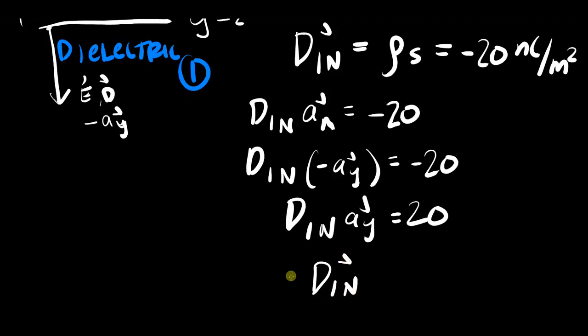That this, which is equal to the whole of electric flux density because there's no tangential component, is then equal to your 20 in the aᵧ direction, nanocoulombs per meter squared.